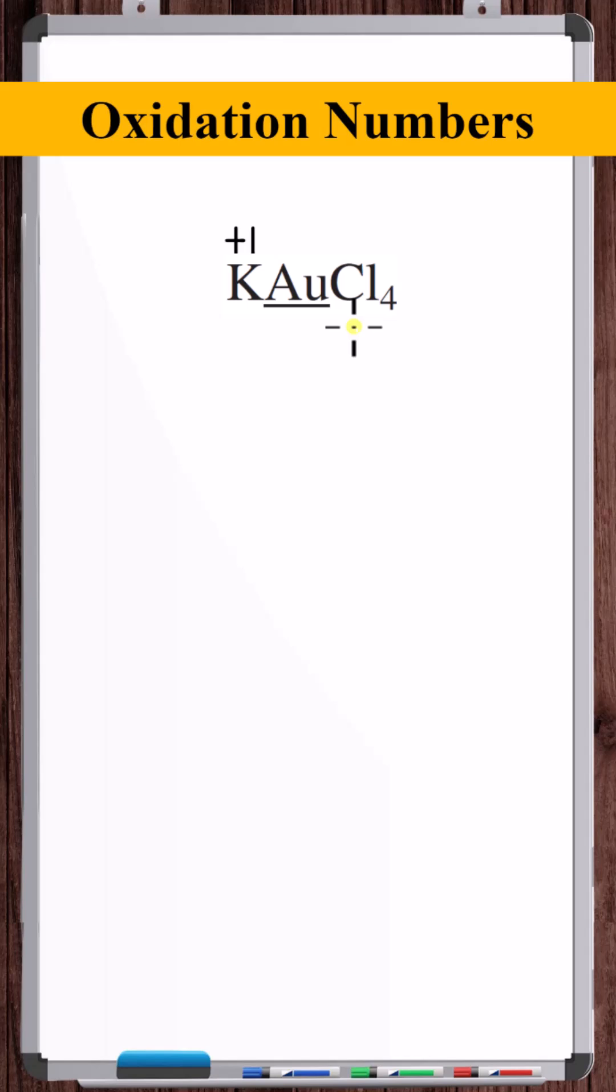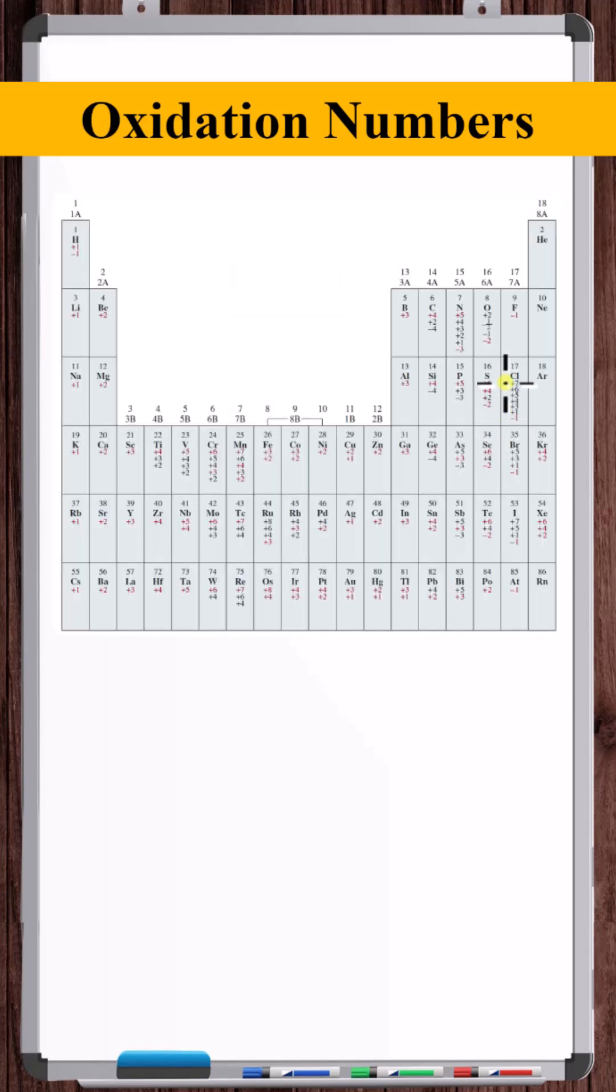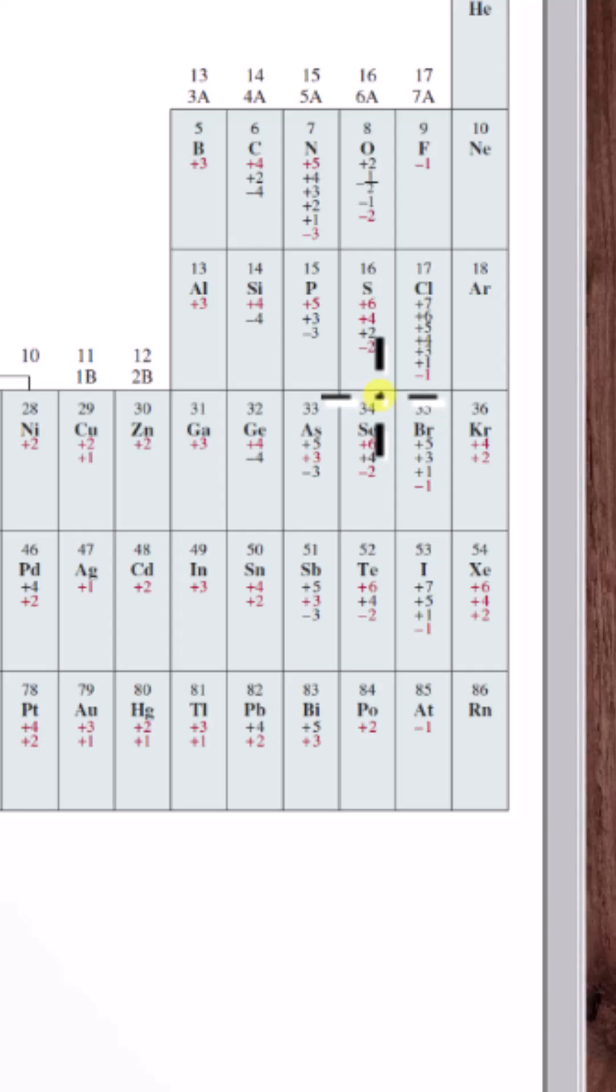Next, let's take a look at the chlorine. This is a halogen. Looking at the oxidation number chart for chlorine, there's an array of different potential oxidation numbers.